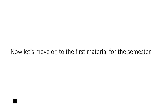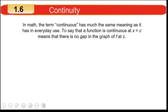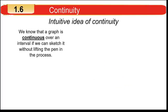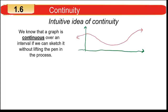Having said that, the topic we're going to talk about is continuity. We'll begin with an intuitive discussion of the idea of continuity. In math, the term 'continuous' is largely the same meaning as in everyday life — there's no gap in the graph at that point. A graph is continuous at point C if it is unbroken at C with no holes, jumps, or gaps. Intuitively, a graph is continuous over an interval if you can sketch it without lifting the pen.